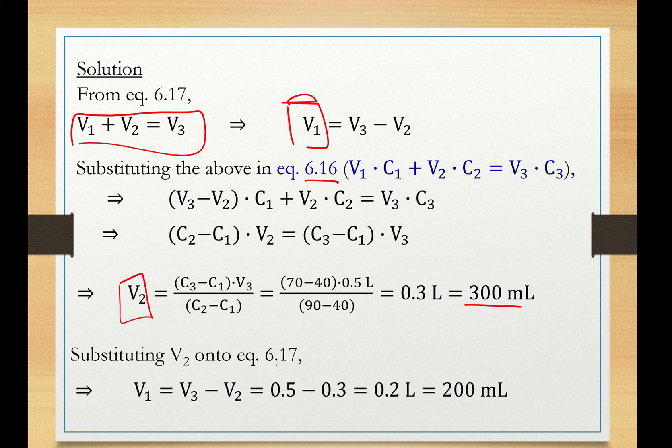Substitute for the numbers there and you end up with 300 ml. V1, go back to equation 6.17, substitute V2 here. We know that V3 is 500 ml or half a liter minus 0.3 liters. You end up with V1 equal to 200 ml. So this is very nice, very convenient.